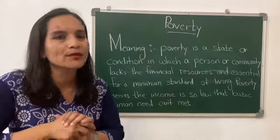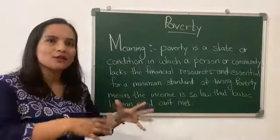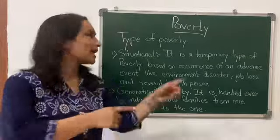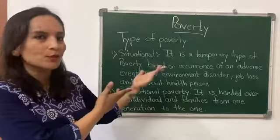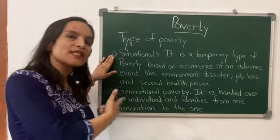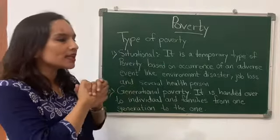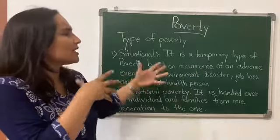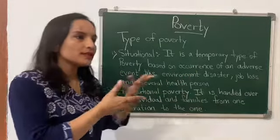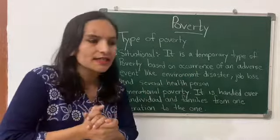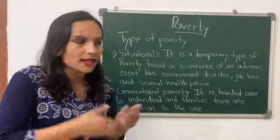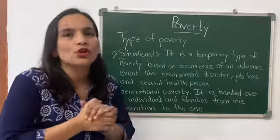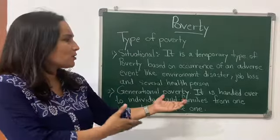There are types of poverty that we will see now. The first one is situational poverty. Situational poverty is temporary — it is based on occurrence. For example, if there is an environmental disaster, or if a person suddenly loses a job or becomes very sick, that is situational poverty.